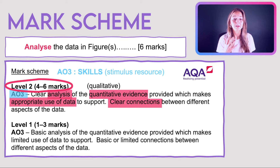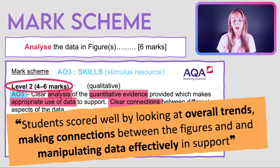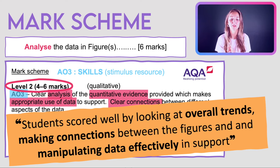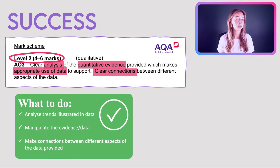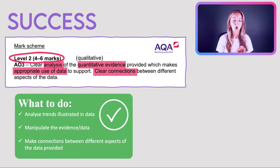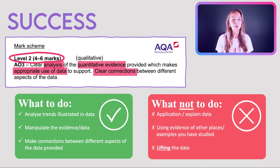According to the examiner's report, students scored well by looking at overall trends, making connections between the figures, and manipulating data effectively in support. That tells us exactly what we need to do: look at trends, make connections, and manipulate data effectively. What we do not want to do is explain the data, apply extra information, give evidence from other places we've studied, or simply lift the data — the examiners want you to do something with it.